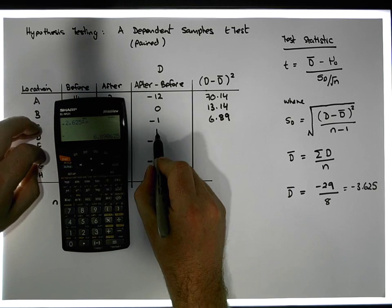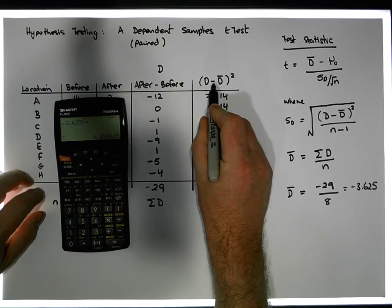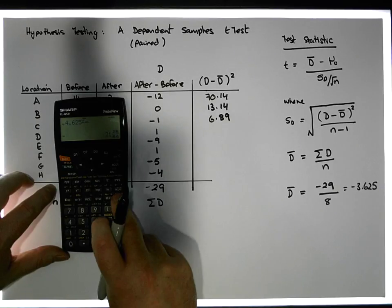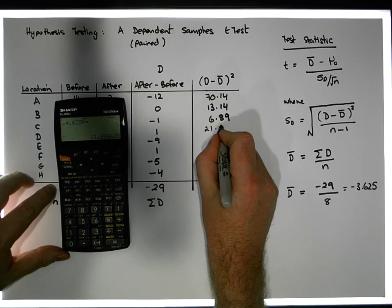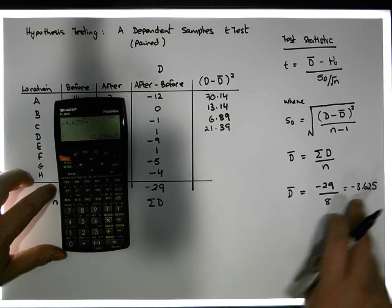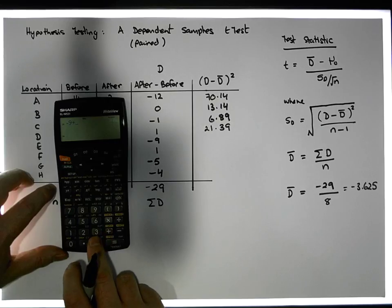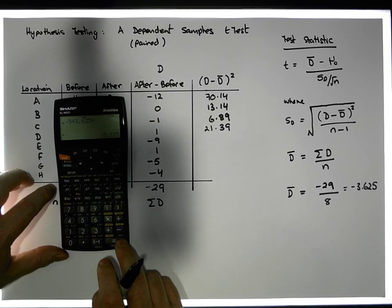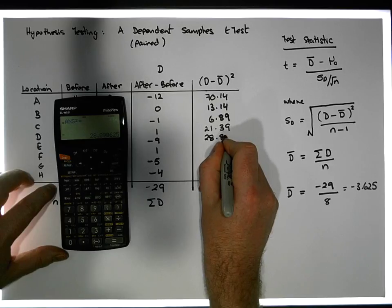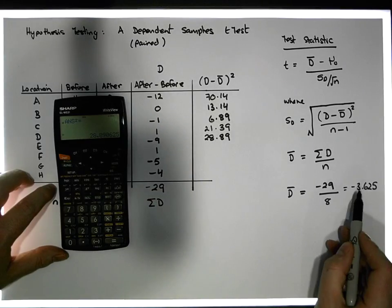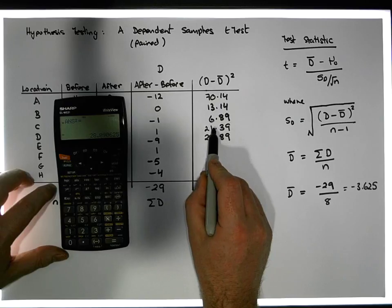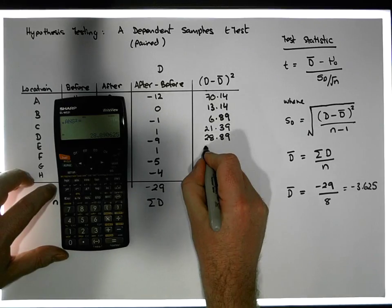The next value is plus 1. Plus 1 minus (minus 3.625) — the minus times the minus gives us a plus — so 1 plus 3.625 gives us 4.625. Squaring that gives approximately 21.39. Then we have minus 9 minus (minus 3.625), so minus 9 plus 3.625 gives us minus 5.375. Squaring that gives approximately 28.89. Then we have 1 minus (minus 3.625), which is the same as before: 1 plus 3.625 equals 4.625, so we again get 21.39.